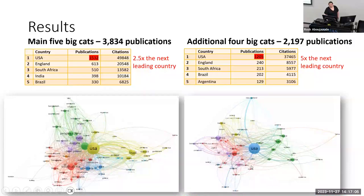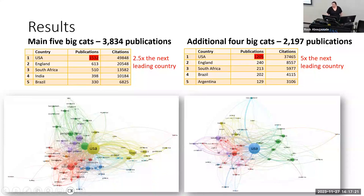With the additional four big cats, three of the top five countries cluster together, showing that the top authorship in the additional four are co-authoring within that cluster. I speculate that the additional four clustering of the U.S., Brazil, and Argentina may be related to literature on the cougar or puma, and I have suggestions for future research related to this.